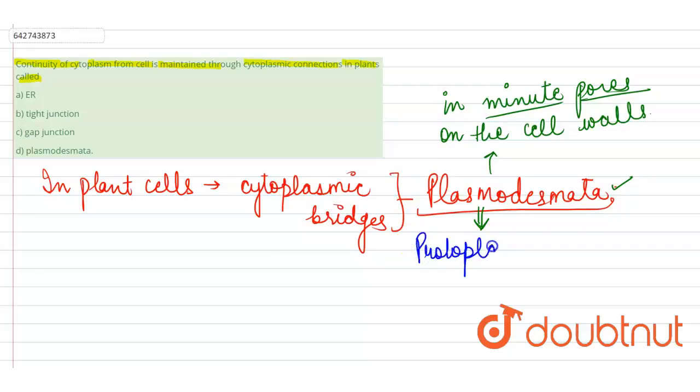Furthermore, it forms protoplasmic continuation between the adjacent cells, which is known as symplast. Symplast is the protoplasmic continuation between different adjacent cells.